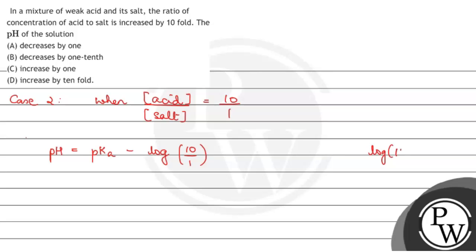So what is log 10? It is equal to minus log 10 equals to minus 1. So now in this case, pH is equal to pKa minus 1.